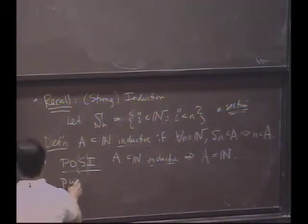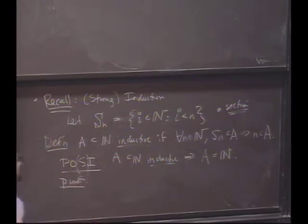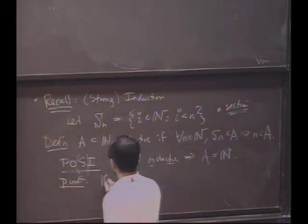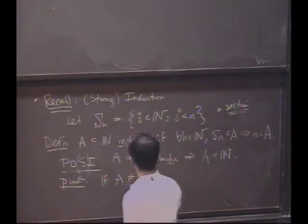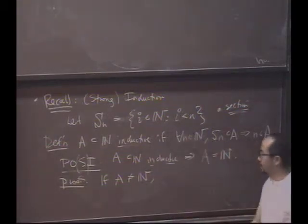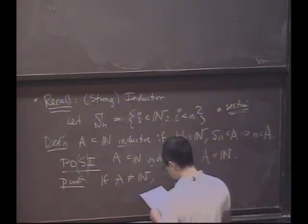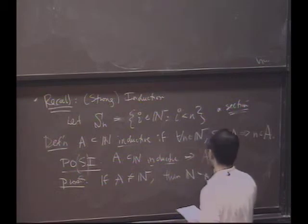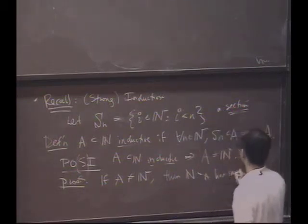Let's see. Let's recall the proof. This is also something we did earlier. Why is it that if a set's inductive, it must be all of N? Well, remember, this is by contradiction. If A was not all of N, then there must be a smallest element that's not in A.